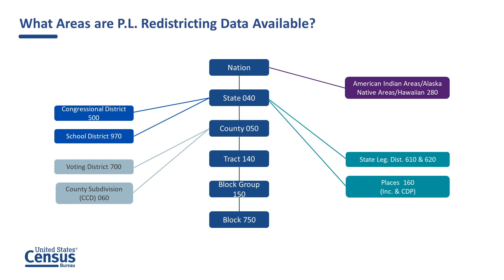As stated earlier, the Census Bureau will furnish the government and state majority and minority legislative leaders, redistricting commissions when applicable, and the nonpartisan state liaisons with the 2020 census population counts for the geographic areas needed to perform legislative redistricting — for example, states, congressional districts, state legislative districts, American Indian areas, counties, cities, towns, census tracts, census block groups, and census blocks.